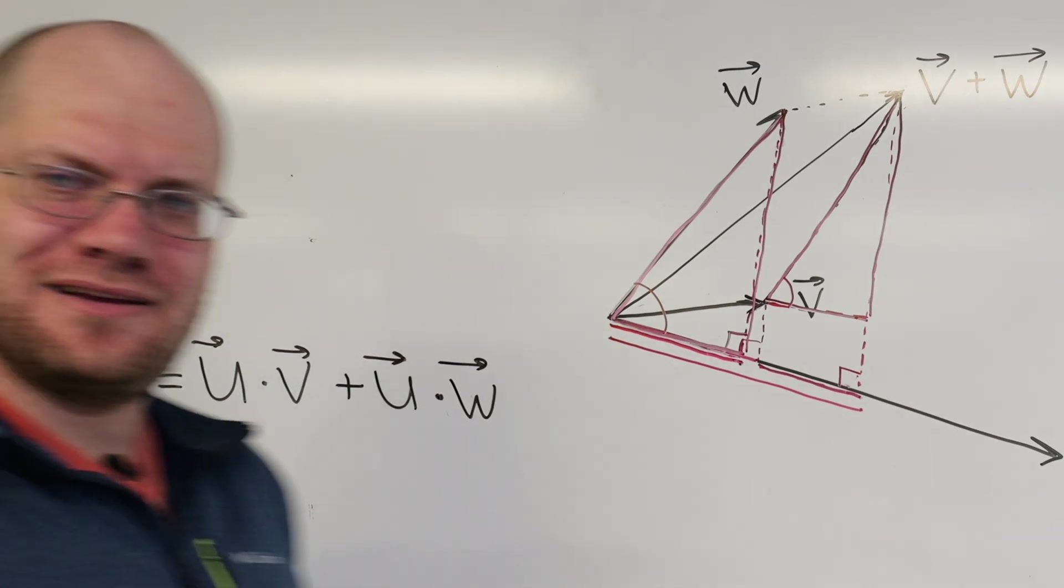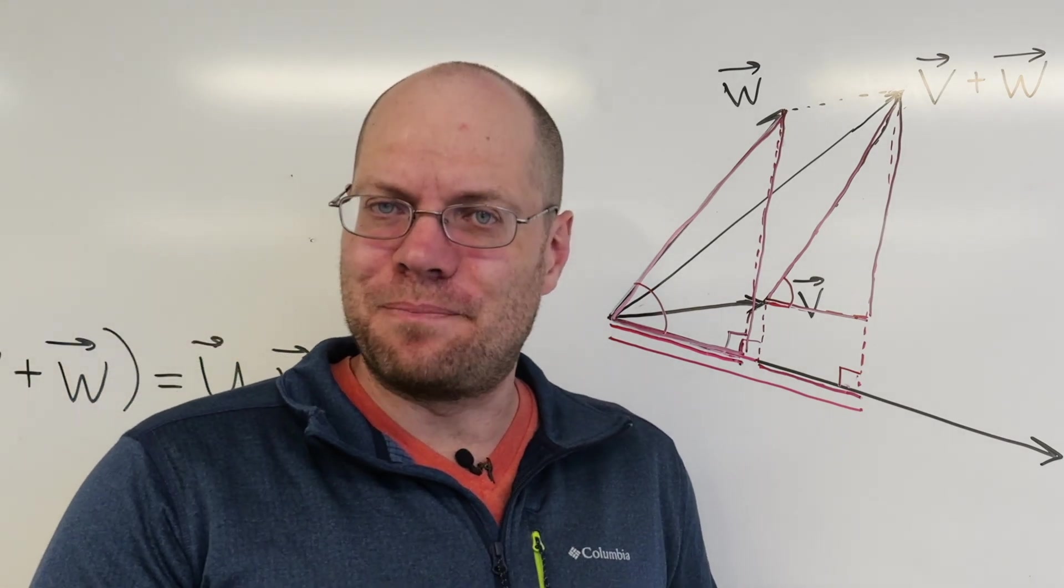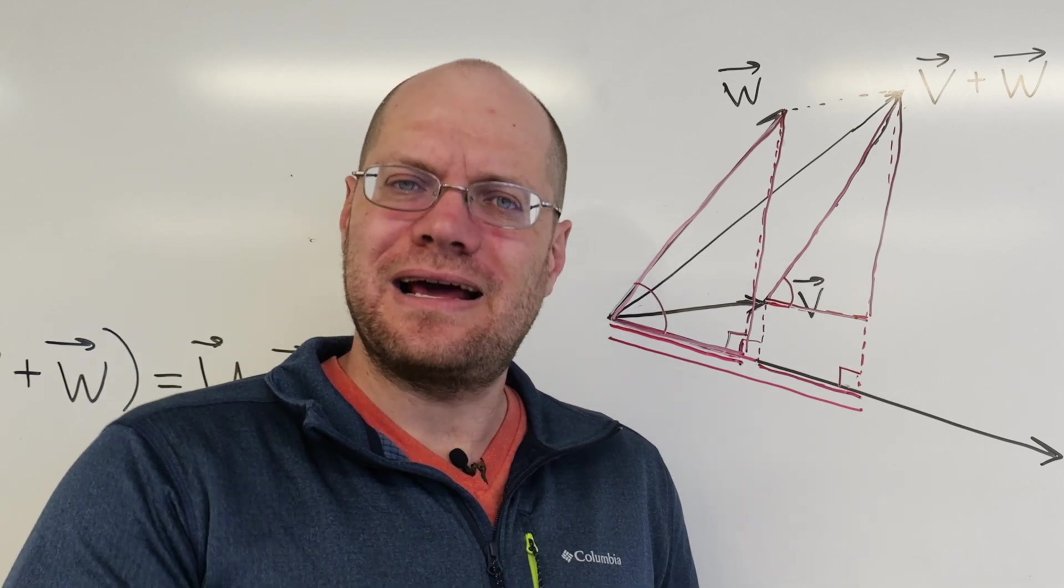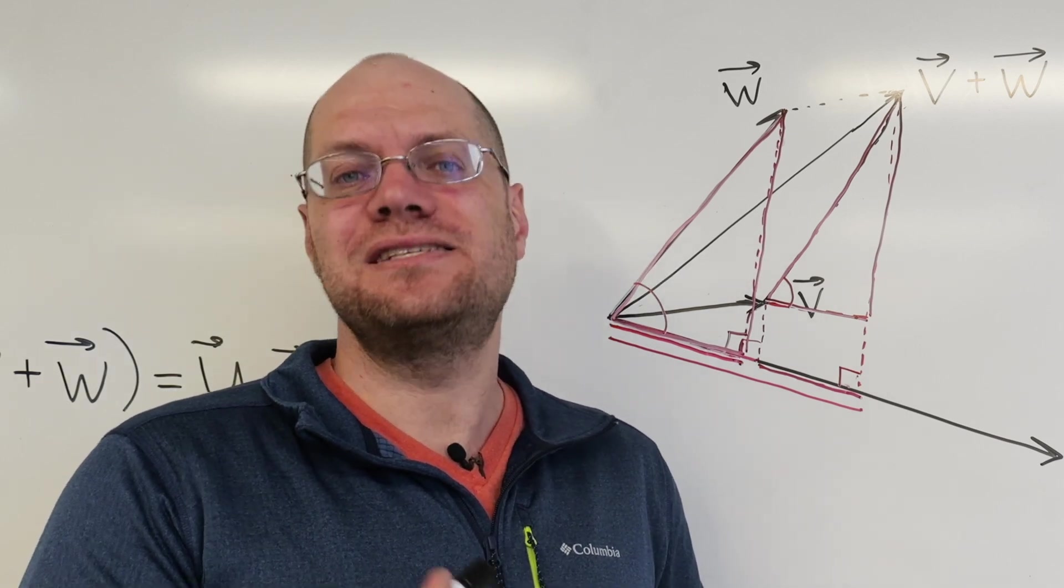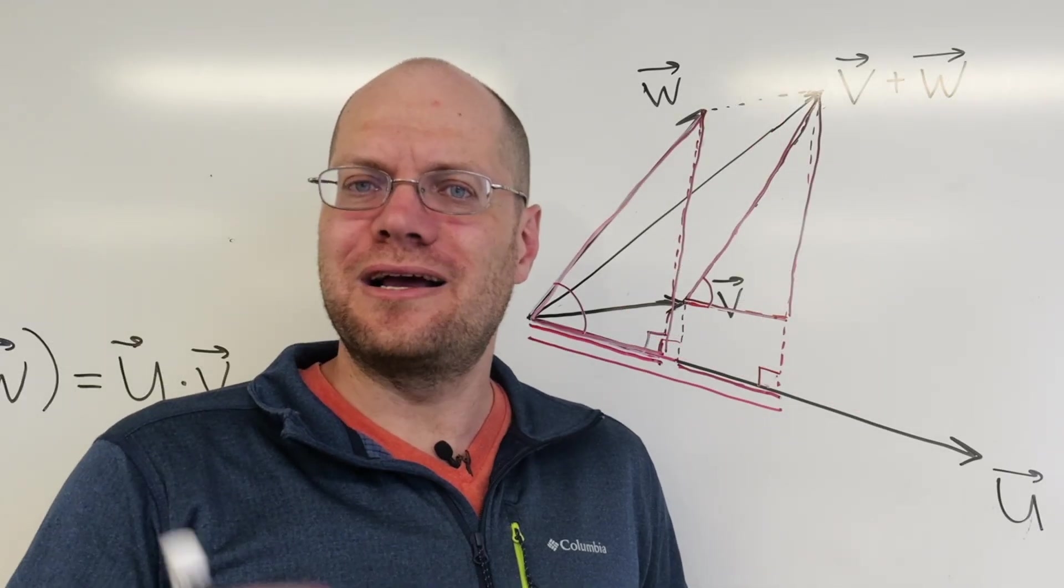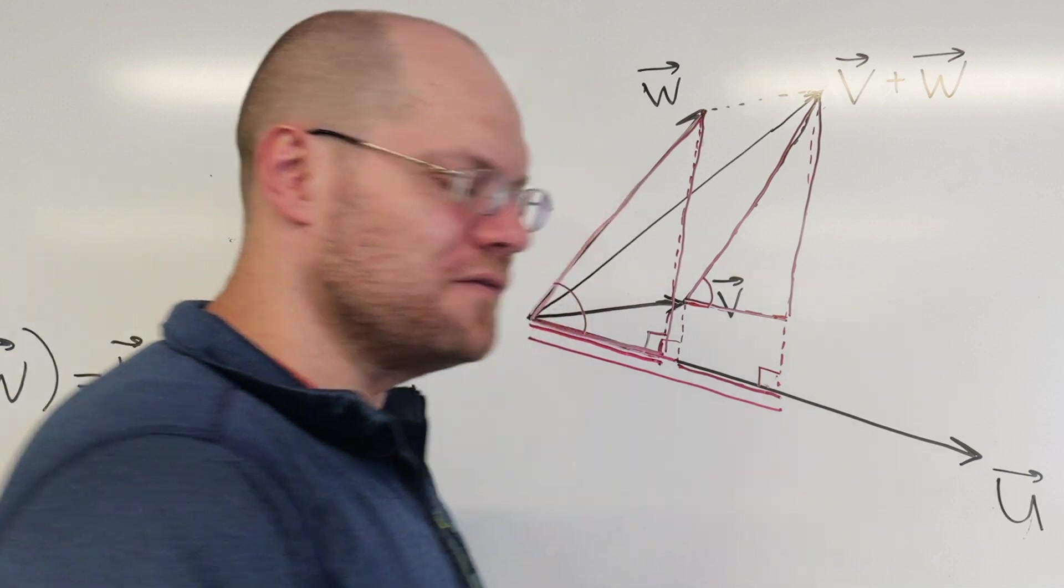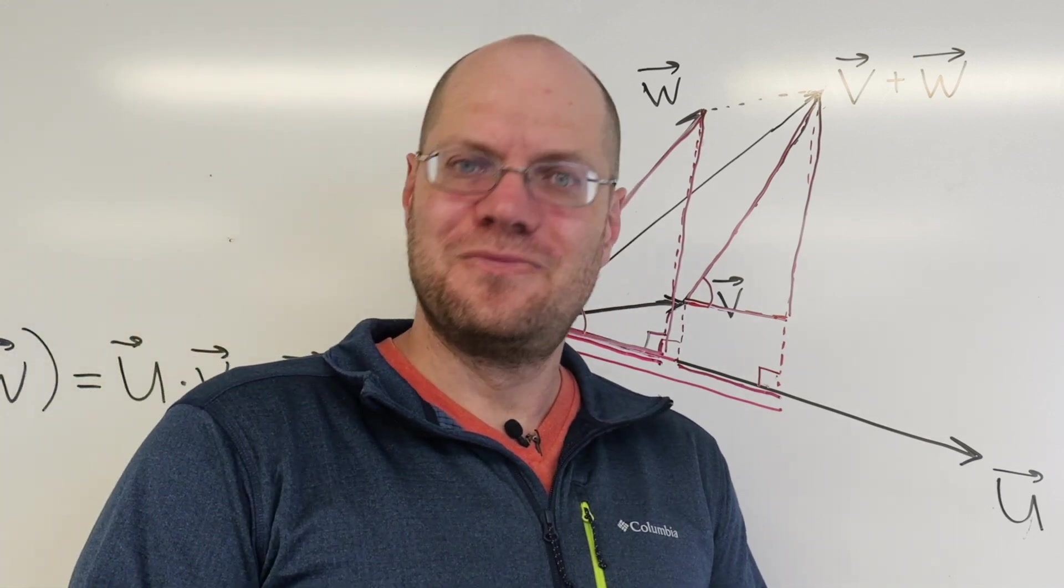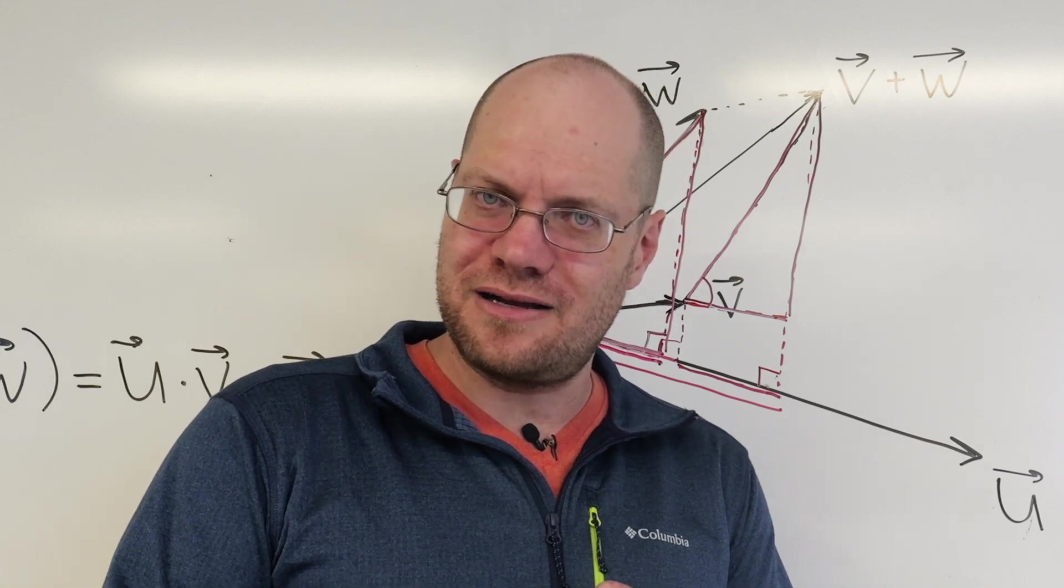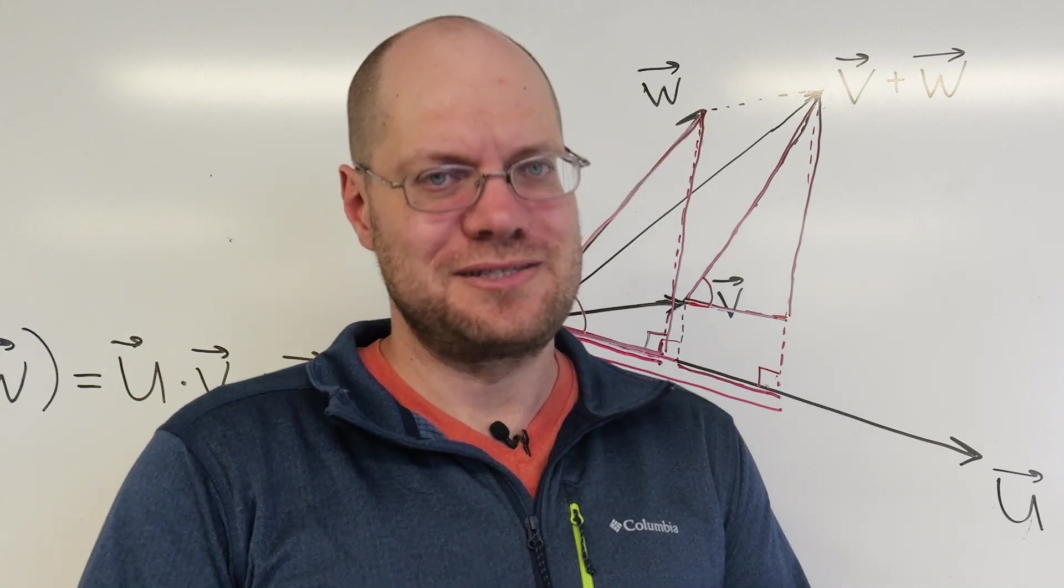So now we have distributivity. And then the final property that is very important for the axiomatic approach to the inner product, positive definiteness, is not even relevant to this proof. So we have now established all of the properties of vectors, all of the algebraic properties of vectors, and all of the algebraic properties of the inner product without using Pythagoras' theorem.